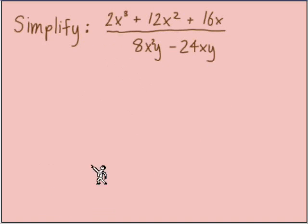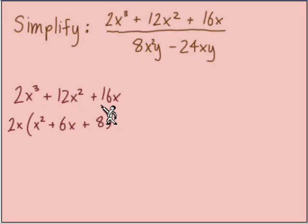Simplifying this expression is starting with the factor. The numerator is 2x to the third plus 12x squared plus 16x. There's a GCF first, a 2x we can factor out of each term. Leftover is a trinomial that we can factor more.